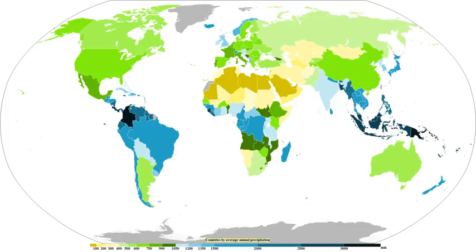On the large scale, the highest precipitation amounts outside topography fall in the tropics, closely tied to the intertropical convergence zone — itself the ascending branch of the Hadley cell. Mountainous locales near the equator in Colombia are amongst the wettest places on Earth. North and south of this are regions of descending air that form subtropical ridges where precipitation is low, the land surface underneath these ridges is usually arid, and these regions make up most of the Earth's deserts. An exception is Hawaii, where upslope flow due to the trade winds leads to one of the wettest locations on Earth.